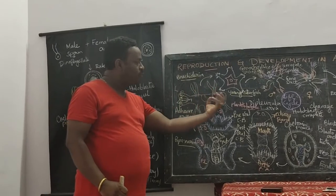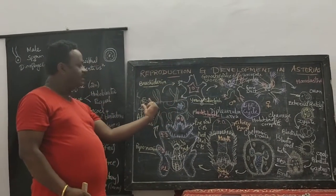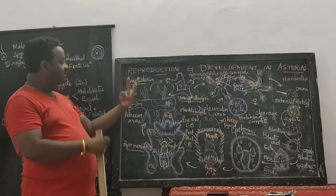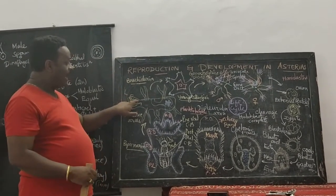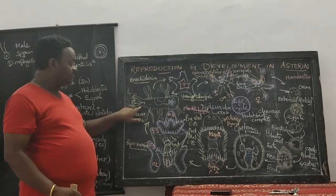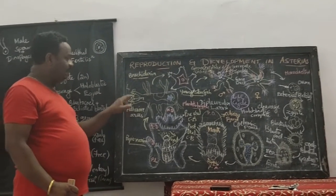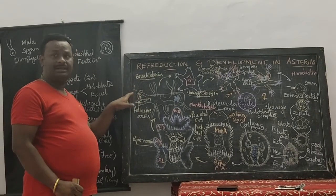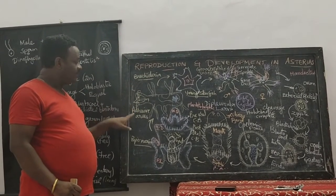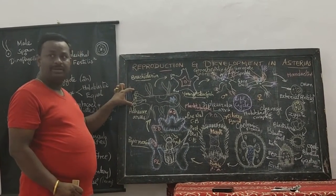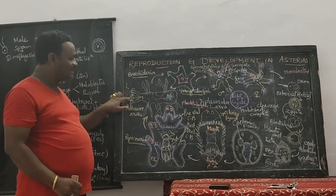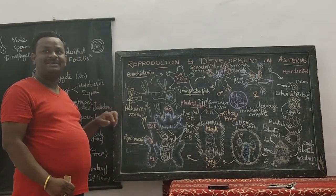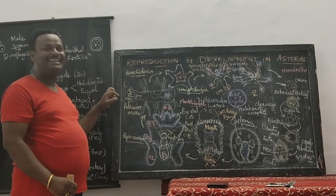The brachiolaria larval structure is similar to that of a round button flask structure. It has a round body and a slender elongated arm, which shows three arms towards the terminus — namely the middle median arm and two lateral arms. The three arms now start producing a sticky substance called the adhesive material.